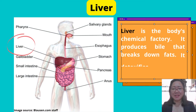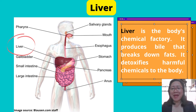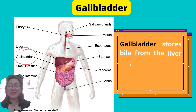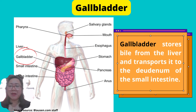Likewise, the liver is an accessory organ. It is the body's chemical factory — it produces bile that breaks down fats and detoxifies harmful chemicals in the body. The gallbladder stores bile from the liver and transports it to the duodenum of the small intestine.